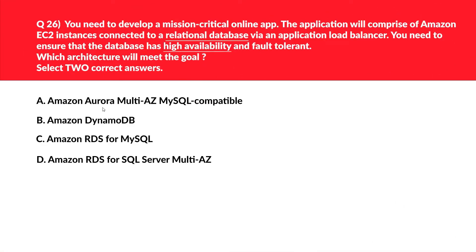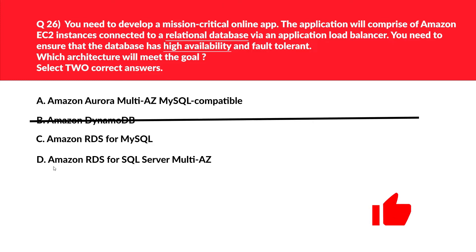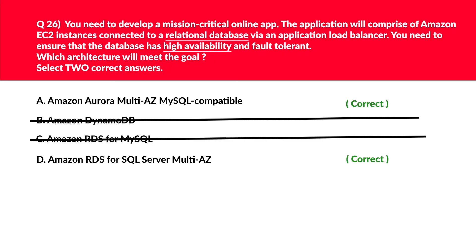This question is related to databases. Option A — Amazon Aurora Multi-AZ, MySQL-compatible — supports high availability through Multi-AZ deployment, and MySQL is relational, making it a perfect fit. Option B, DynamoDB, is a NoSQL database and global tables are not mentioned as active, so it's incorrect. Options C and D both use RDS, but option D incorporates Multi-AZ deployment for fault tolerance and high availability, while option C uses a single availability zone. Hence we reject C and lock A and D as the correct answers.